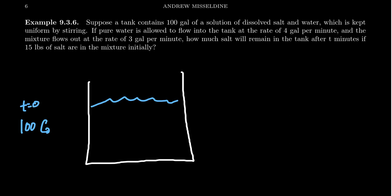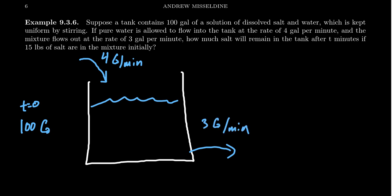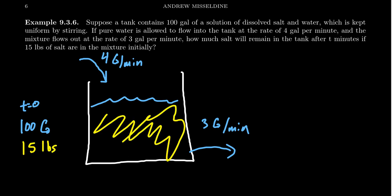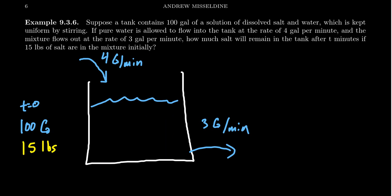Suppose that water is allowed to flow into this tank at a rate of four gallons per minute — pure water, with no salt. And the mixture flows out of the tank at a rate of three gallons per minute. We want to ask how much salt is going to be in the system after T minutes if there are 15 pounds of salt originally, evenly distributed throughout the water.